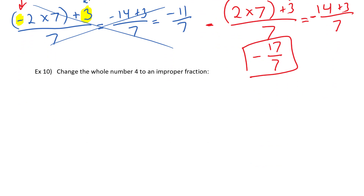Last question: change the whole number four into an improper fraction. Any whole number can be turned into a fraction by putting it over the value of one. In this case, the numerator four is more than the denominator one — so four over one. This will be important later when we're doing multiplication and division of fractions.